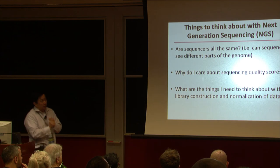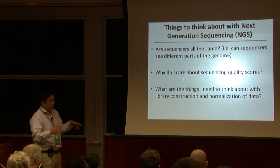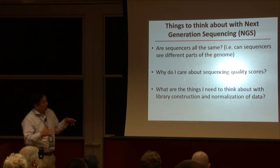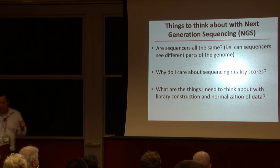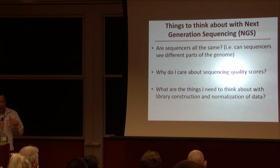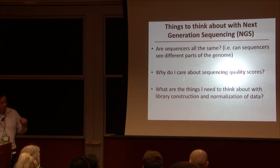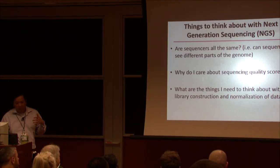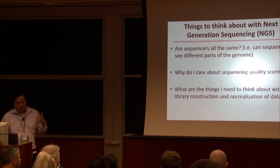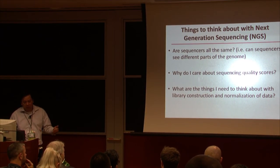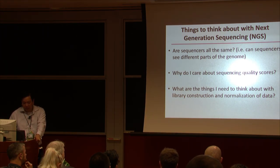The things to think about with what we call next generation sequencing, or NGS, are: are all sequencers the same? Can sequencers see different parts of the genome? The second part of the talk I'll discuss why we care about sequencing quality scores, and the last part is thinking about how things change if we change how libraries are constructed or normalize data from NGS.